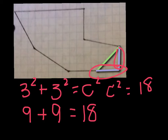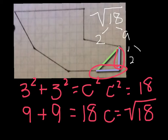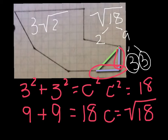So now c would be the square root of 18. The square root of 18 can be simplified because 18 factors as 2 times 9, and then 9 can be divided into two 3's. The two 3's can come outside the radical, so it would be 3 times the square root of 2, and that equals c. So that is our answer for that side.